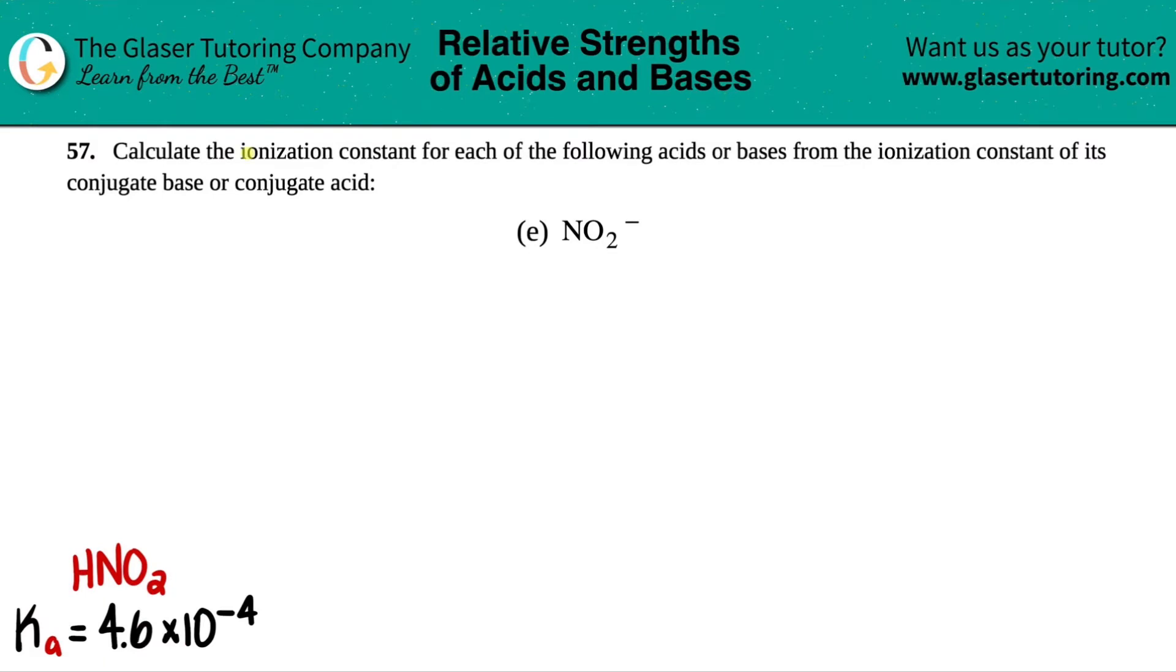Number 57. Calculate the ionization constant for each of the following acids or bases from the ionization constant of its conjugate base or conjugate acid. In this case we have letter E and we have NO2 minus.